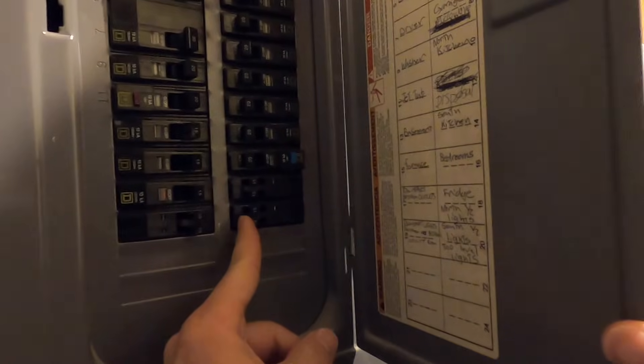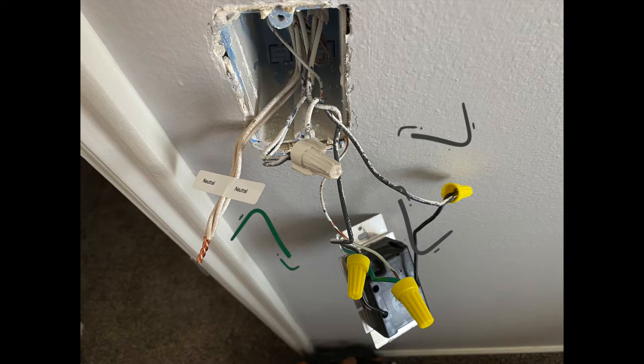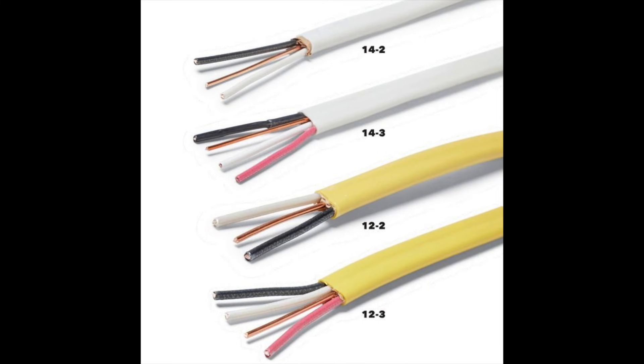I pulled apart my outlet after turning off the circuit breaker, of course, to discover that I only had two wires and a ground running up to the fan in the ceiling. Come to find out that my switch was only wired with 14.2 wire, and you need 14.3 wire if you want to control your fan separate from your light.